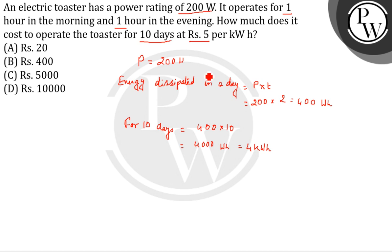Now it says that the rate is rupees 5 per kilowatt hour. So, the cost will be equal to 5 into 4 which will be equal to 20 rupees. So, the correct answer is option number A, rupees 20. Thank you.